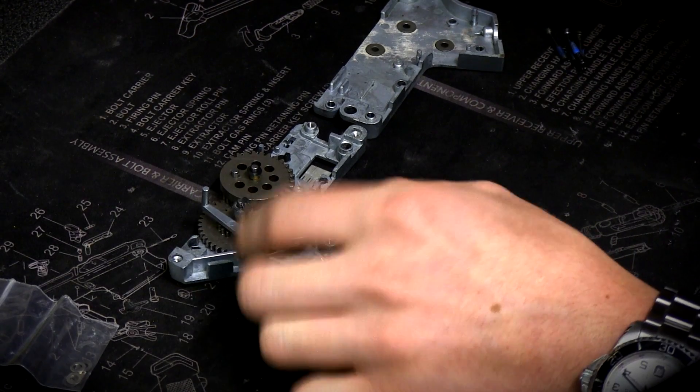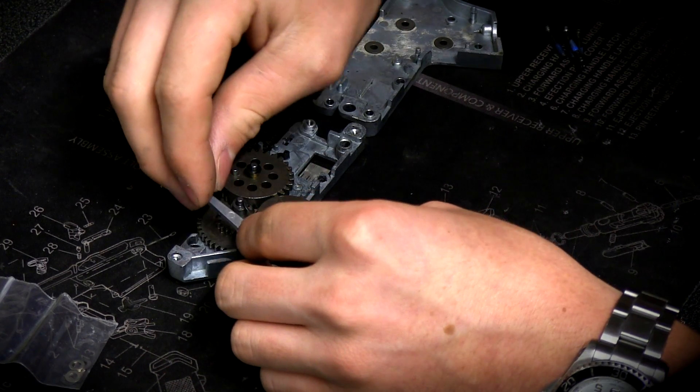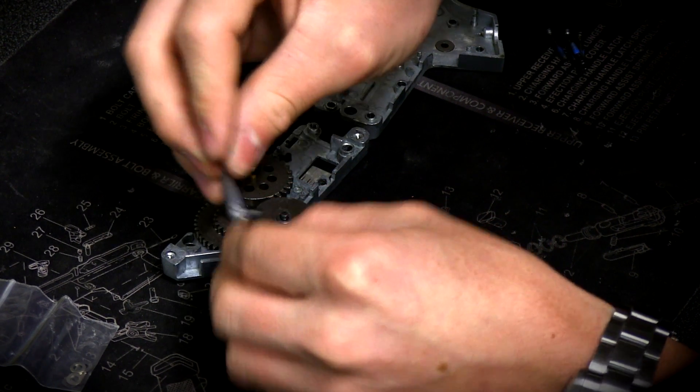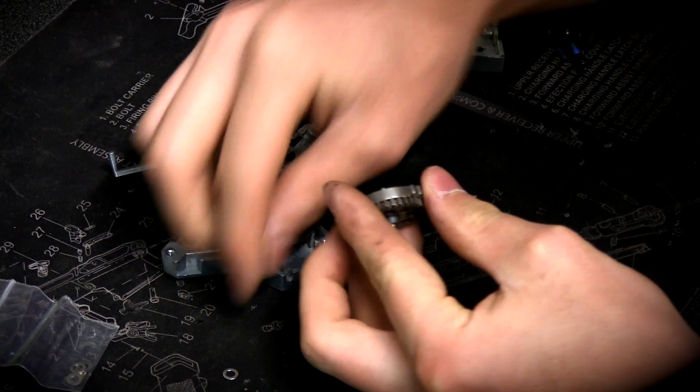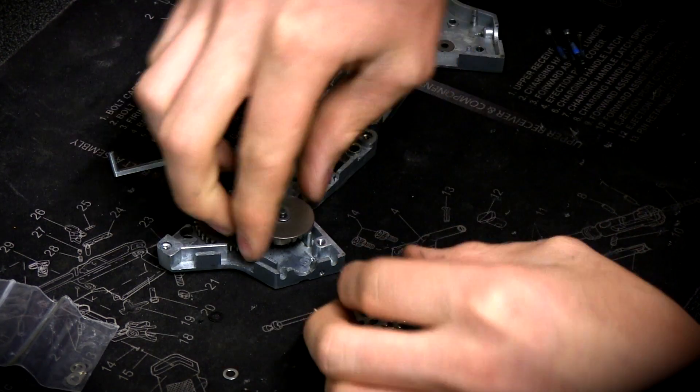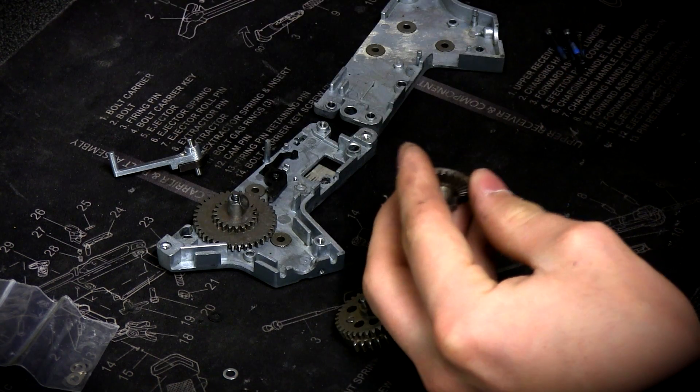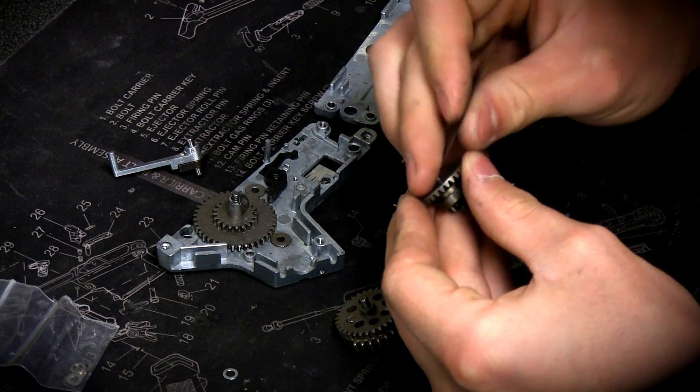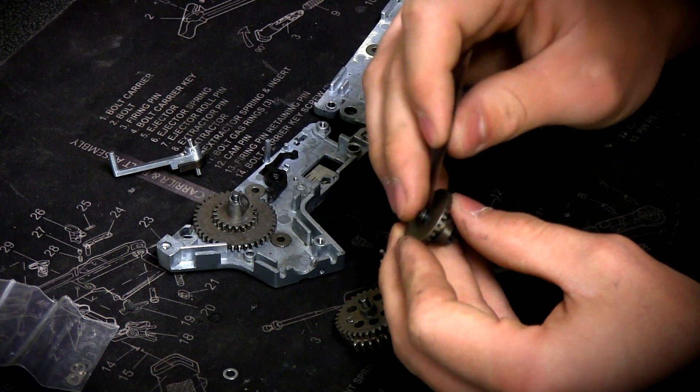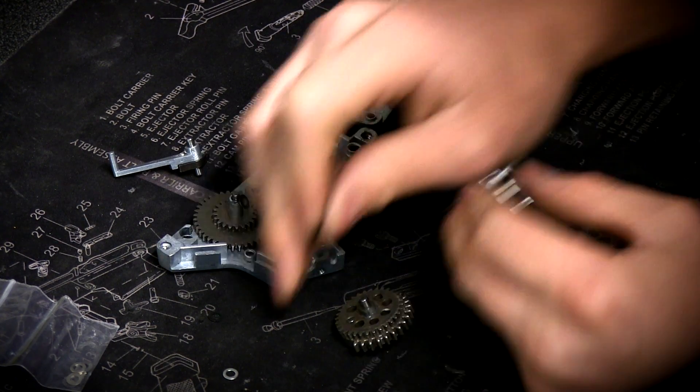So you're going to start by opening your gearbox. Remove your entire gear set as well as all previous shims. A razor is helpful for getting those stuck shims off the face of the gear.